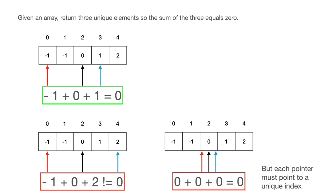The third example has indices of two, two, and two. This represents the values zero, zero, and zero, which, although they do equal zero, each pointer must point to a unique index, and so that particular triplet isn't valid.